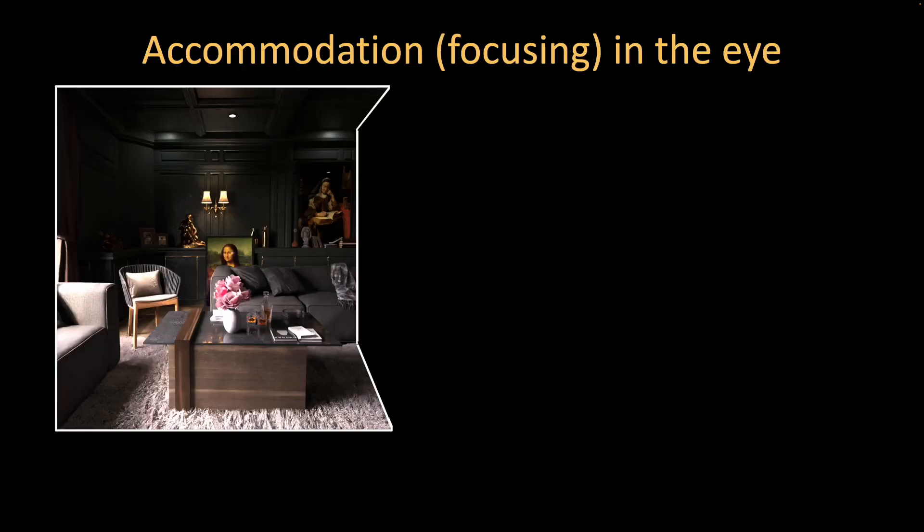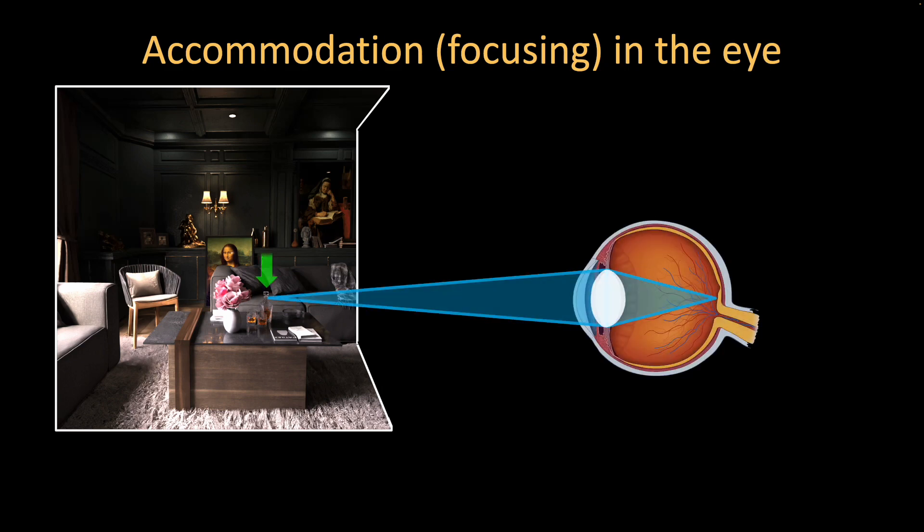When looking at real-world scenes, the lens of our eye adjusts to form a sharp image on the retina, accounting for objects positioned at different depths.